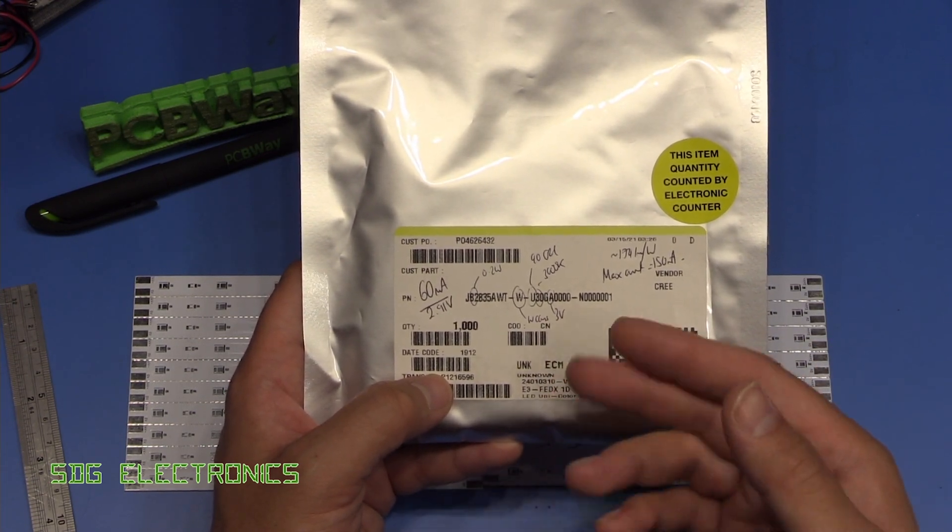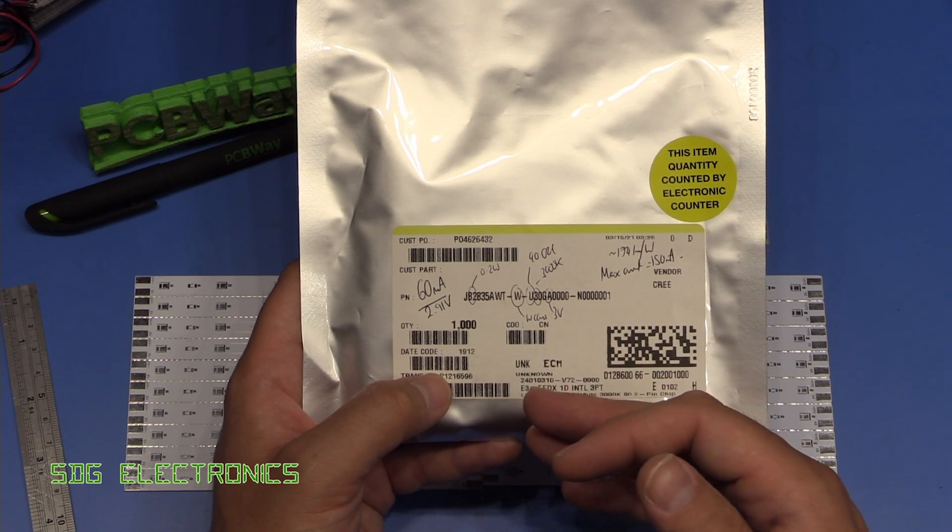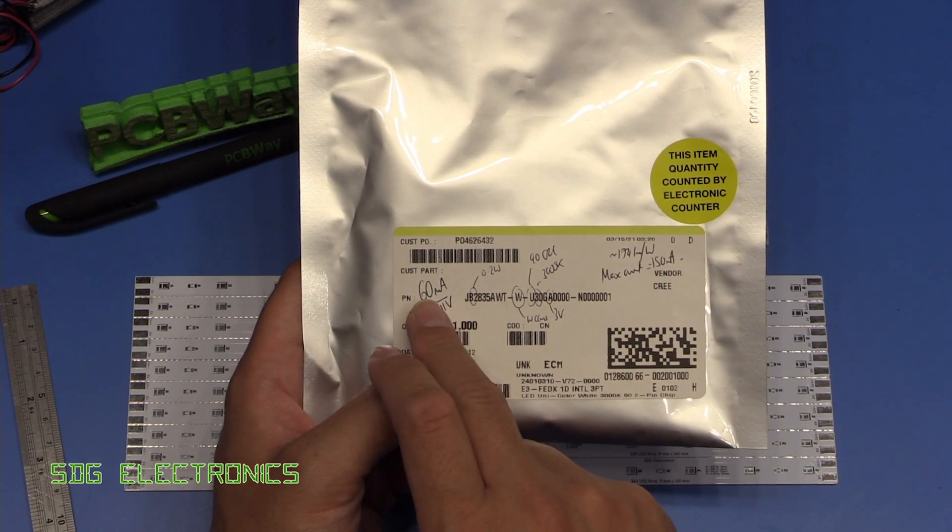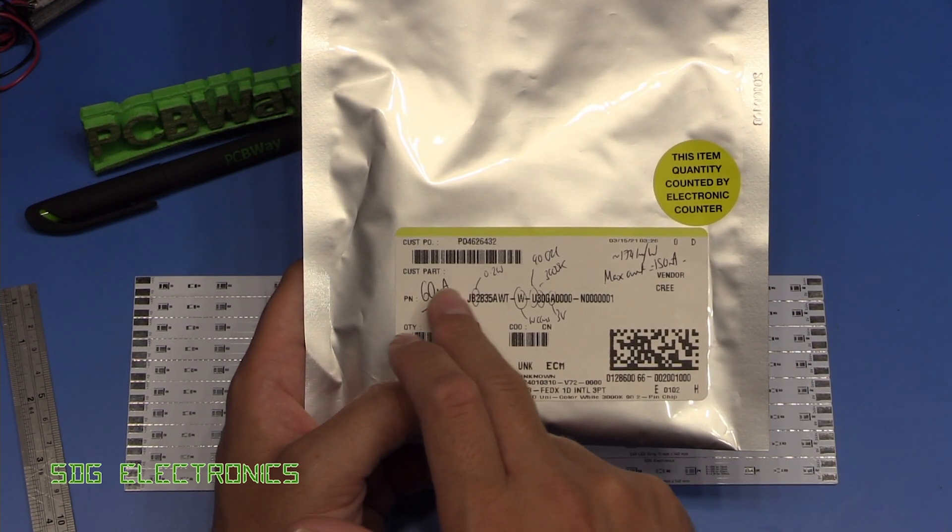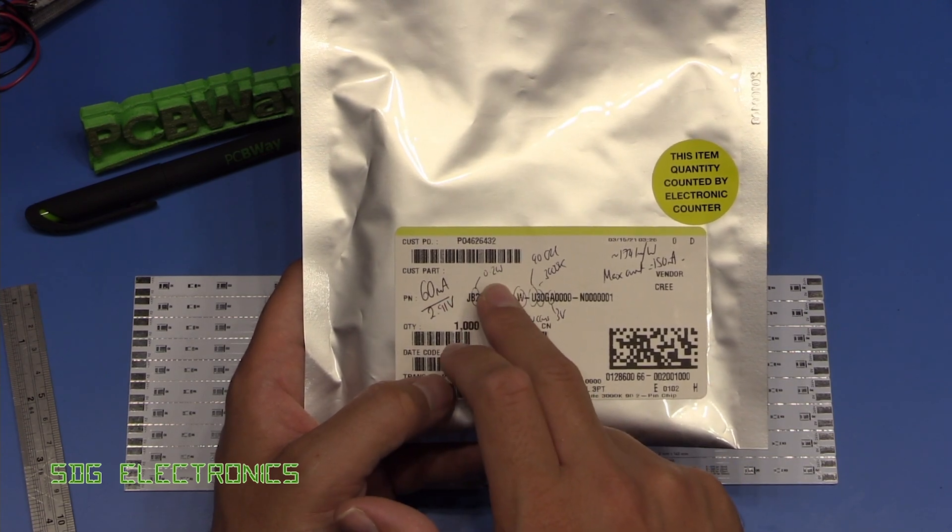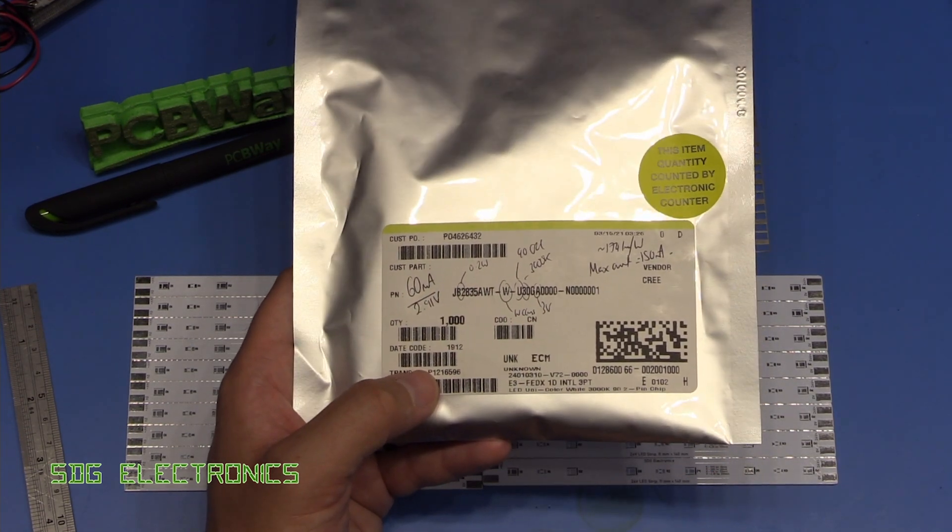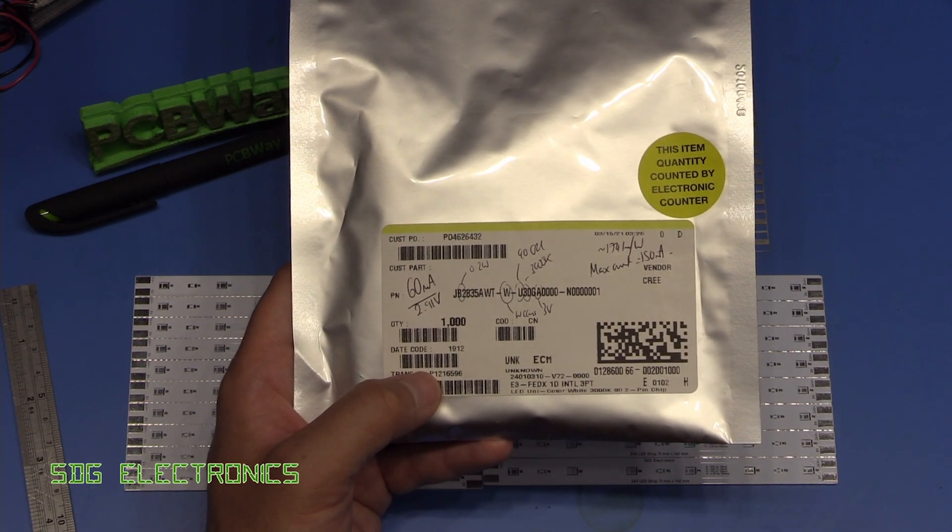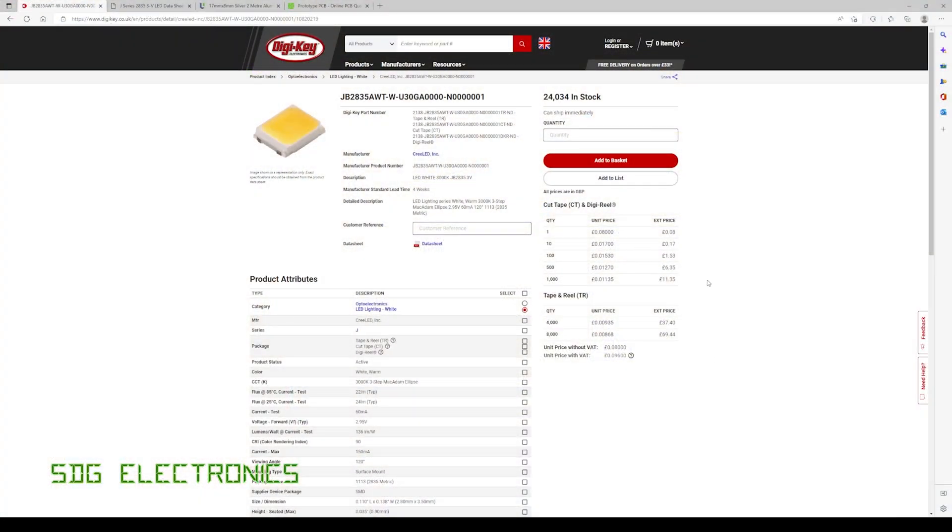Each LED has a forward voltage drop of around 3 volts. There are some other options with a forward voltage drop of 9 volts or something like that, but these are the 60 milliamp forward current type giving a total power dissipation of about 0.2 watts per LED chip.